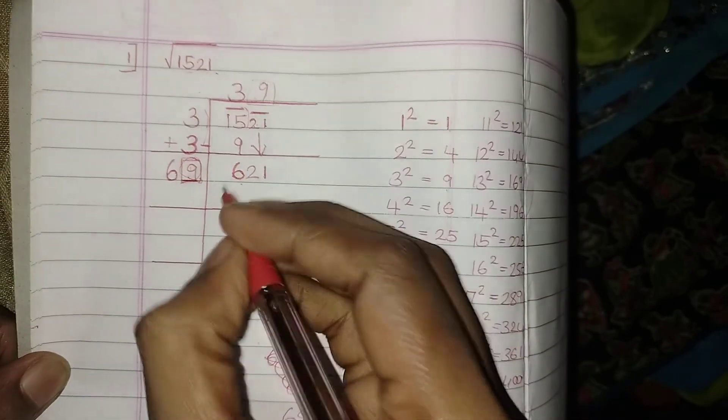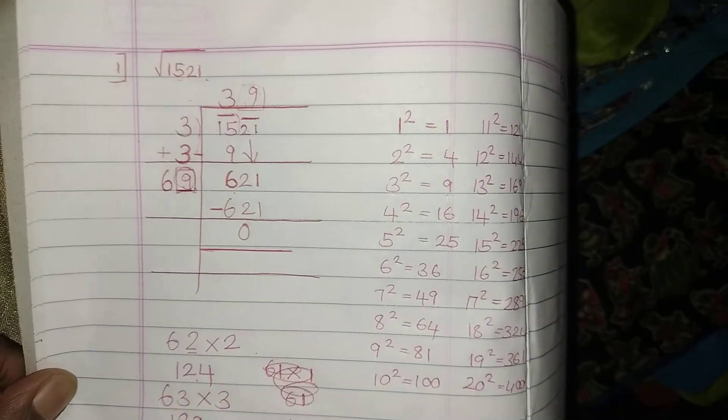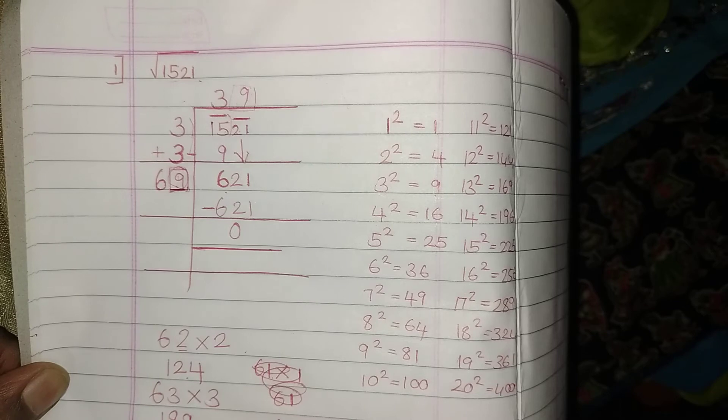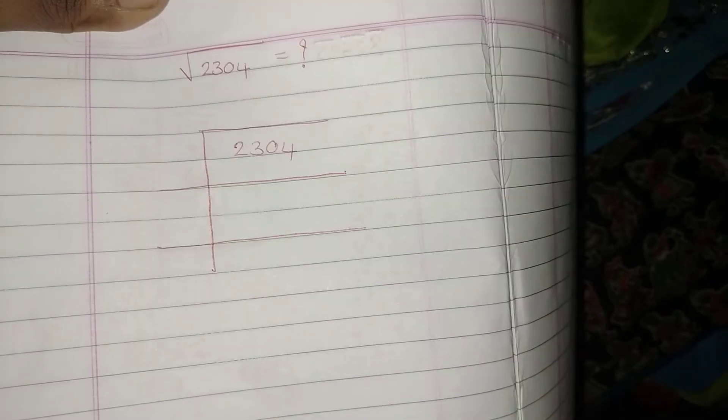So 69 into 9 is 621. Now subtract, I'll be getting my answer as 0. So this is how we need to find the perfect square. Okay, now let me help me out to find the next perfect square.